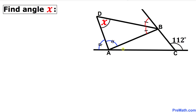Welcome to PreMath. In this video tutorial we have this compound shape, as you can see in the diagram, such that these two red angles are congruent and moreover these blue angles are congruent as well, and this angle C is 112 degrees. Now we are going to find the value of this angle X.